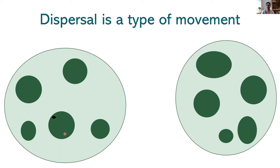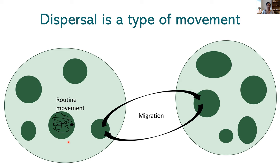Routine movement is movement for activities like mate searching or foraging, and typically occurs within a habitat patch. Migration is another class of movement — round-trip movement between geographic regions, often in response to seasonality. Dispersal is one-way movement between habitat patches and is the only type of movement that produces the potential for gene flow.